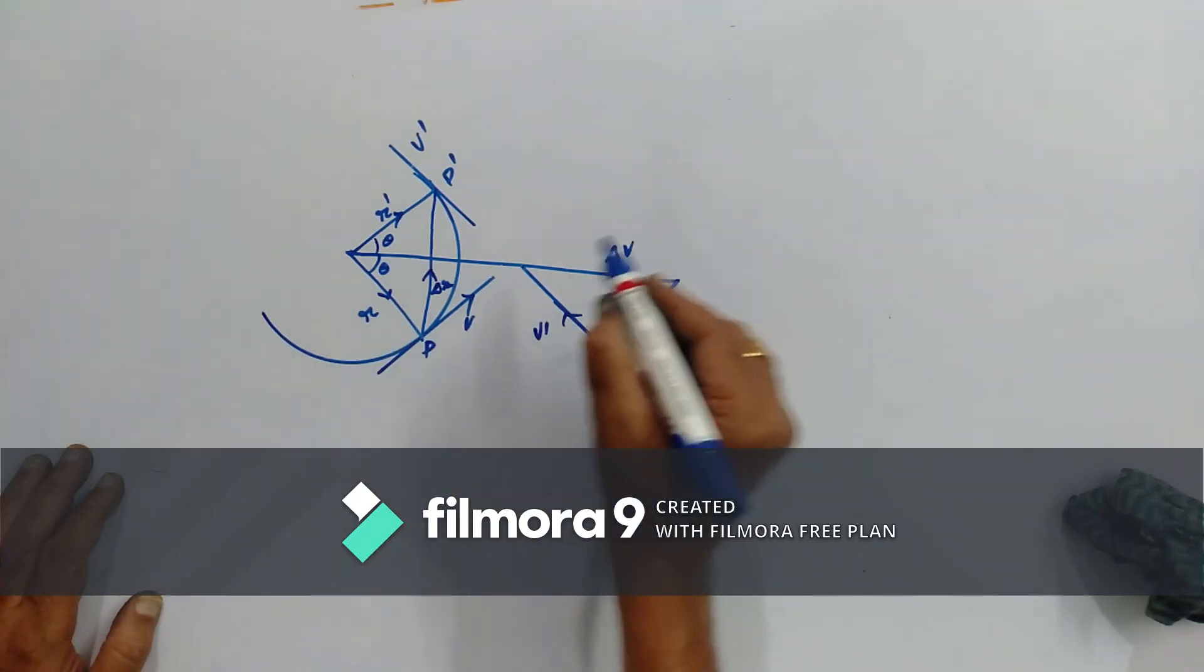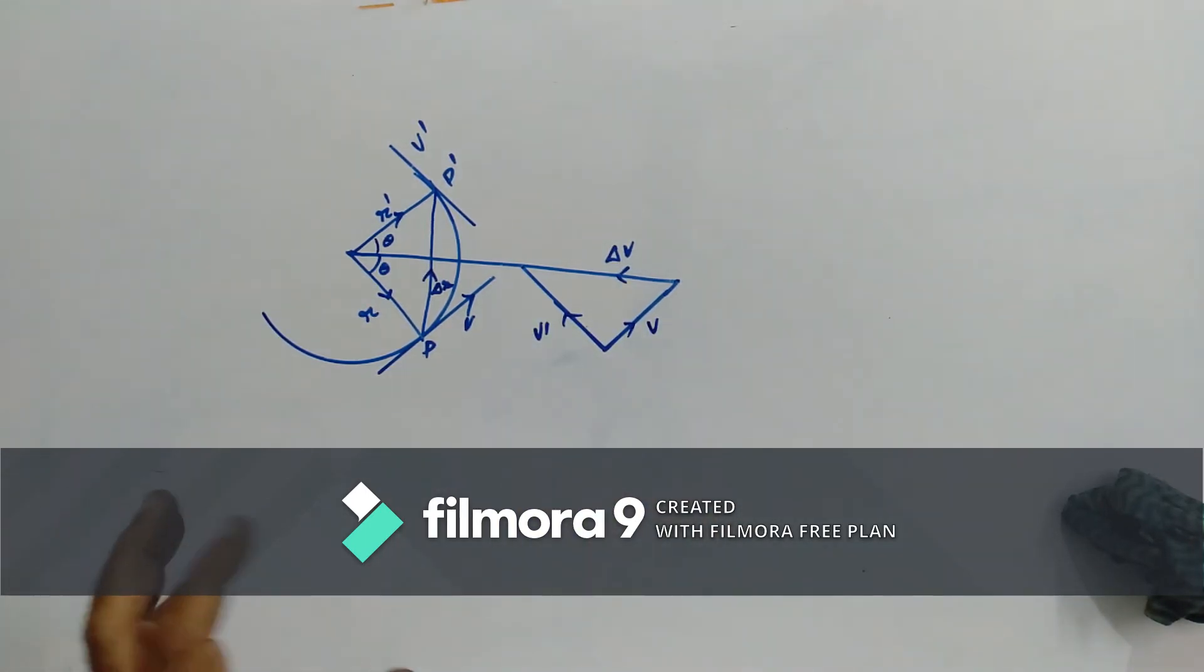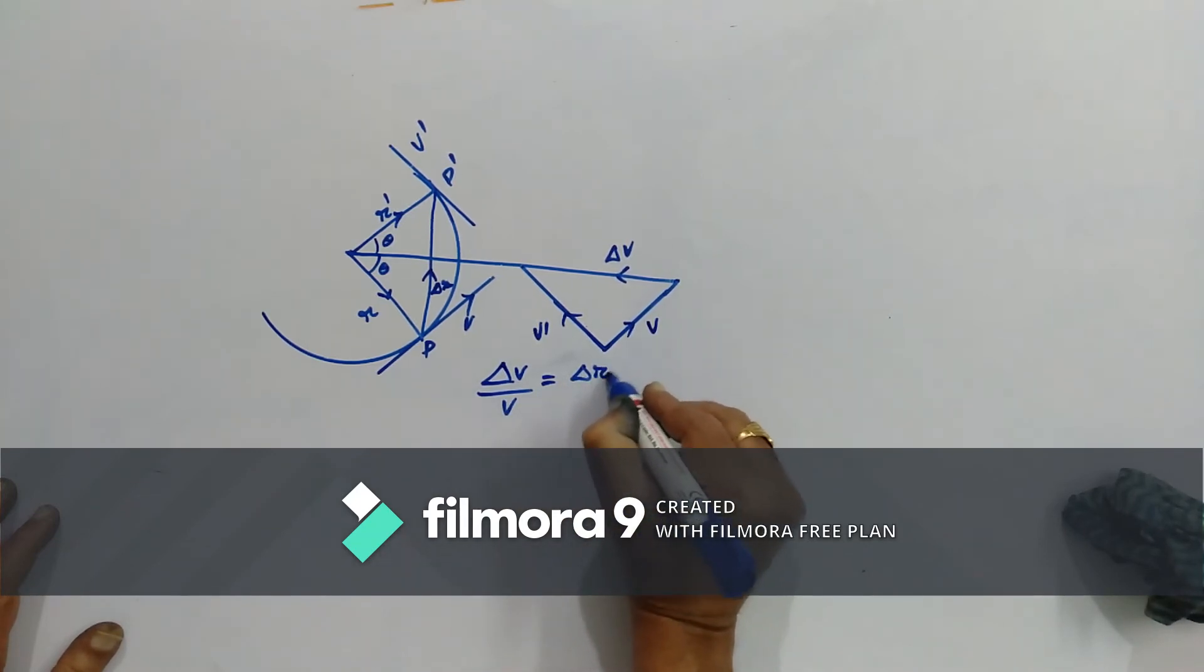Now, when the two triangles are similar to each other, in that case we can write the ratio of the corresponding sides in proportion. So, I can write delta V by V must be equal to delta R by R.